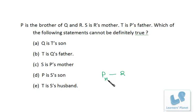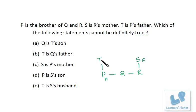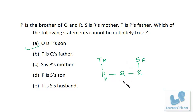The question asks: which of the following statements cannot be definitely true? Option A says Q is T's son. Now Q is either son or daughter — we cannot be sure because we do not know the status of Q, whether male or female. So we cannot be sure of it. Since the status of Q and R is missing, we cannot say whether Q is T's son or daughter. The correct answer is option A.